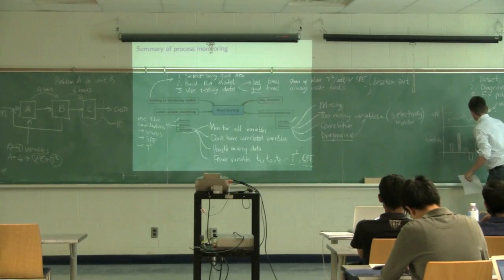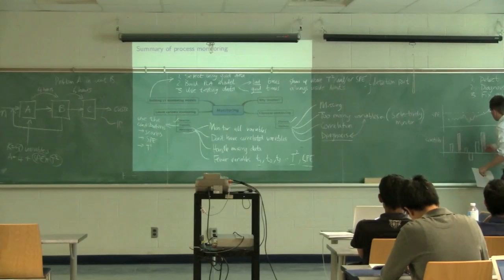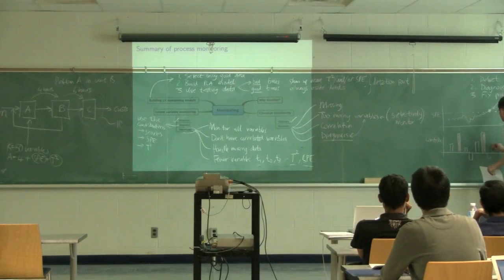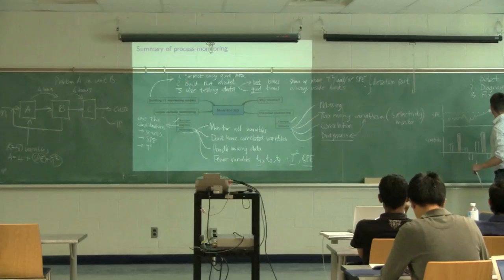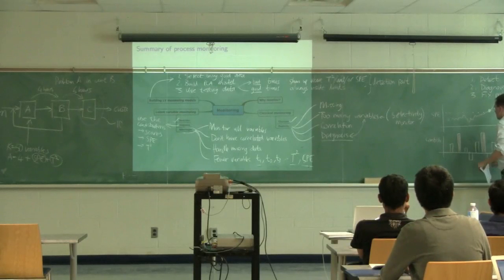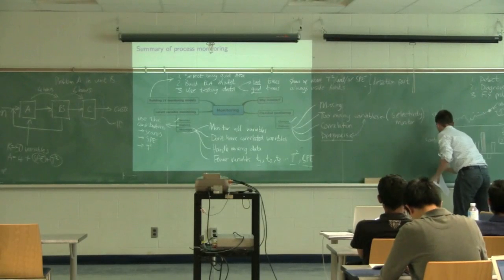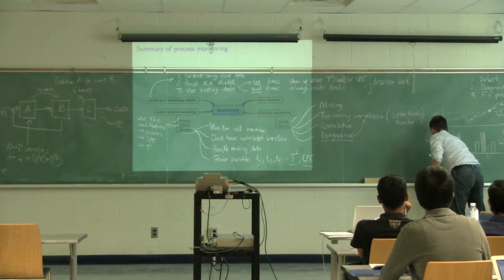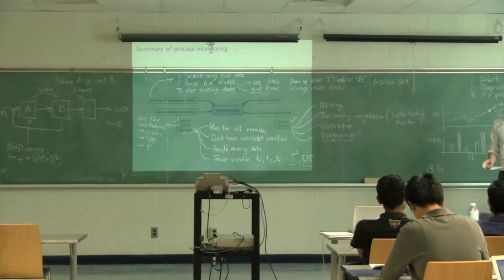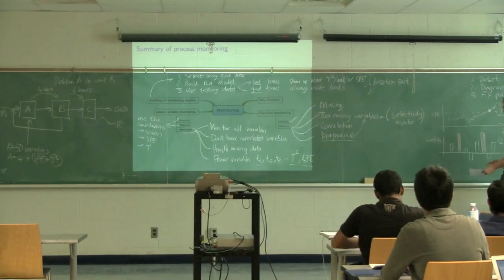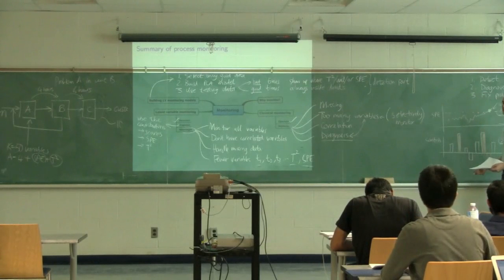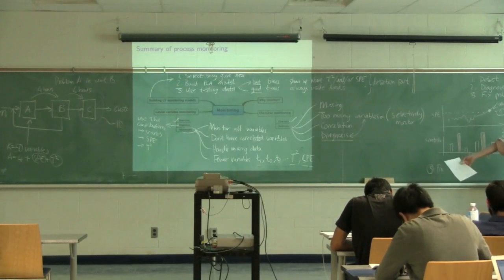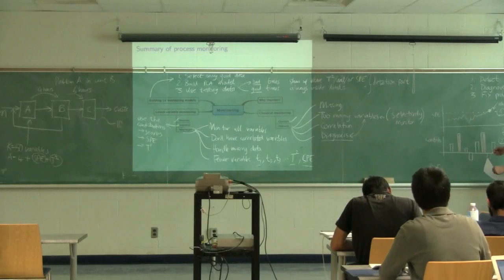The variable with large bars reduces your problem space from many variables down to just these fewer variables—that's the diagnosis. So this is step one, step two, and then step three is to fix the problem. That's really dependent on the process itself—for every system you're monitoring, this step would be slightly different. So that's the general philosophy of process monitoring: detect with your score plots, SPEs, and T², then diagnose, then make some sort of corrective action.